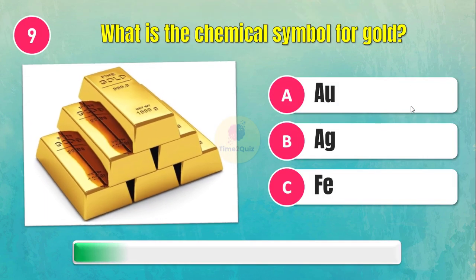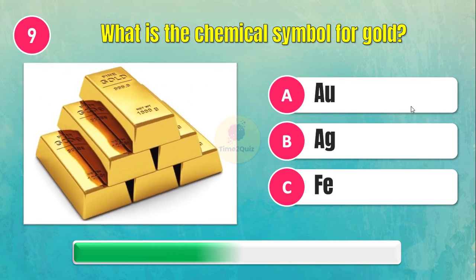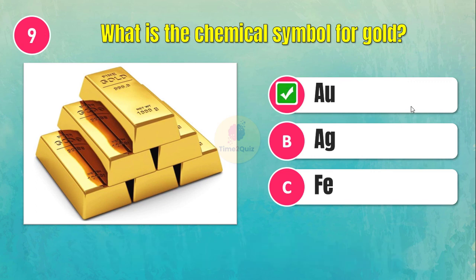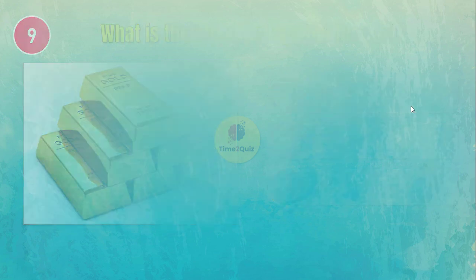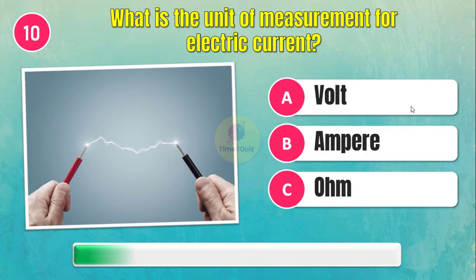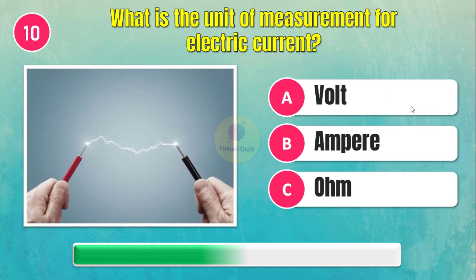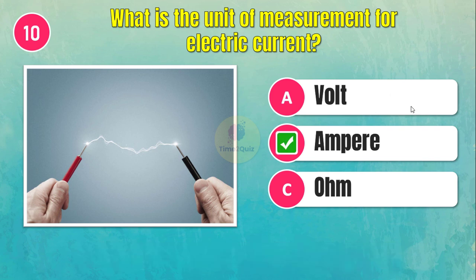What is the chemical symbol for gold? Au. What is the unit of measurement for electric current? Ampere.